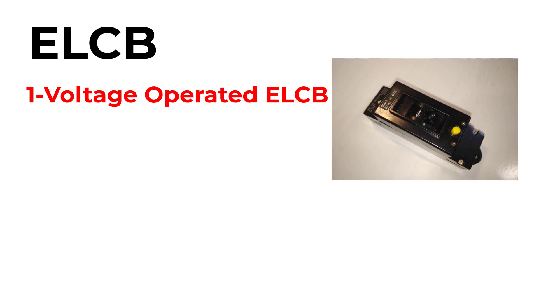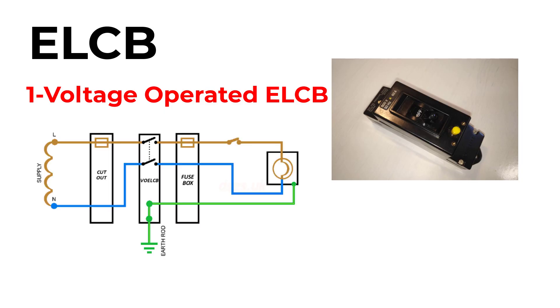ELCB stands for earth leakage circuit breaker. Historically, people used ELCB for two different devices. The voltage-operated ELCB is an older design that trips if it detects a rise in voltage on the earthing system. It depends on the earth path and can miss some dangerous faults, like a live-to-neutral shock. So these are obsolete in modern standards.